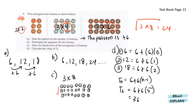We have 3 by 8, that will give us 24 buttons. Lastly for D, calculate the value of T6. Let's derive the algebraic expression first. Here we have Tn equals to 6 plus 6 times n minus 1. So for the sixth term, we have 6 plus 6 in a bracket times 5, because n minus 1 equals to 5. Altogether, we get 36 buttons on the sixth term.